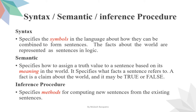Semantics specifies how to assign a truth value to a sentence based on its meaning in the world. Every statement or fact has some meaning, and we have to preserve it in knowledge representations. It specifies what fact a sentence refers to. A fact is a claim about the world and may be true or false. Every statement can be either true or false — that is what semantics deals with.